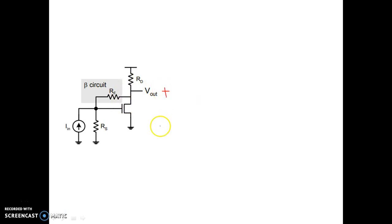See here, across this, we are taking the output voltage V out. The beta circuit or feedback circuit is basically this RF resistor. The input current is coming from the function generator.